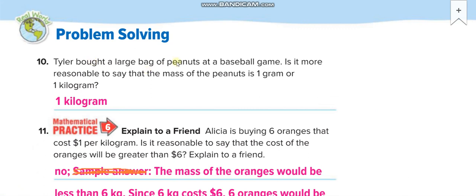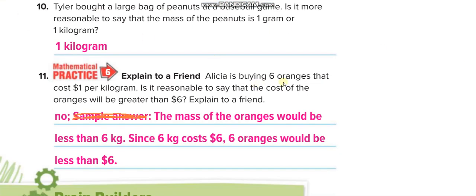Tyler bought a large bag of peanuts, large bag. So what do you think? It's one gram or one kilogram? Of course, one kilogram. If they asked just one peanut or two, three, five peanuts, we will say one gram. But they said a large bag of peanuts, of course one kilogram. Is it reasonable to say that the cost of oranges will be greater than six dollars? No, of course not.